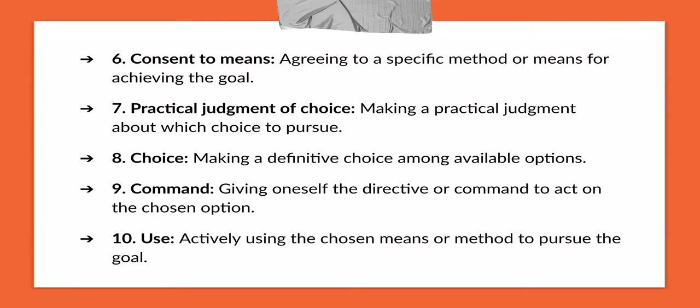Number eight is choice — making a definitive choice among available options. Within these two choices, let's say we decide to ask mom for money to buy an iPhone 15. We consider: working might take about two months of saving, while asking mom might get it within a day. You deliberate and pick one. The ninth one is command — giving oneself a directive to act on the chosen option. We've decided to ask mom, so we pick up the phone, find mom's contact, and call.